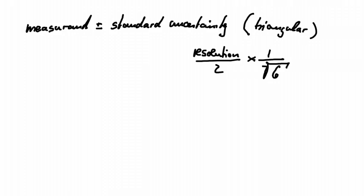So that's similar to the uniform distribution times 1 over square root 6. Where does this 1 over square root 6 come from? This comes from the probability distribution of a triangular function, and we can discuss that in a different video.